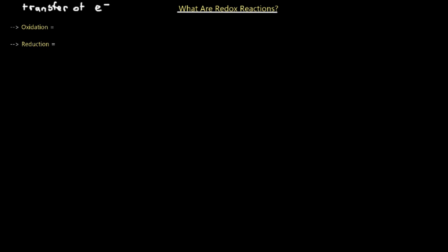Oxidation is the loss of electrons, and reduction is the gain of electrons. If one molecule is oxidized, another molecule must be reduced within the same reaction. That's really all you need to know about redox reactions, and when we go through glycolysis and other energy-metabolizing processes, I'll point out which reactions involve oxidation and which involve reduction.